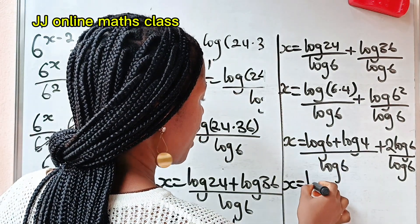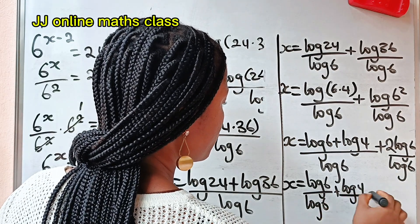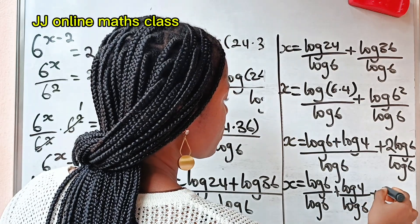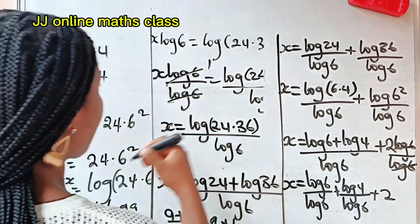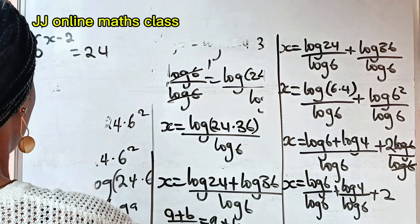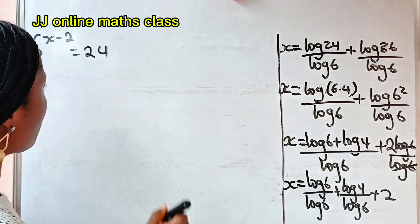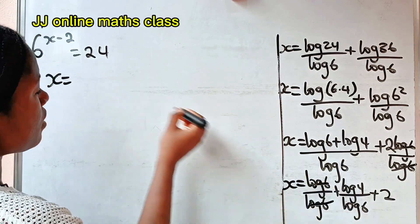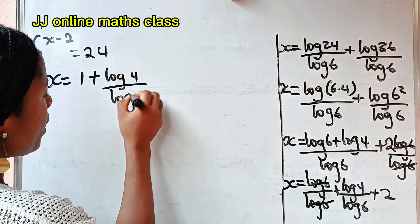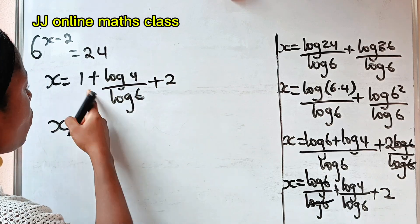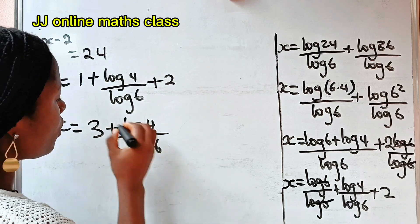Now we distribute the denominator: log 6 divided by log 6, plus log 4 divided by log 6, plus 2. Log 6 divides itself to give us 1, so we have 1 plus log 4 divided by log 6, plus 2. Therefore x is equal to 3 plus log 4 divided by log 6.